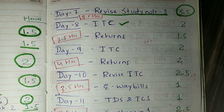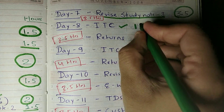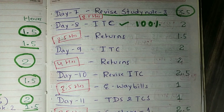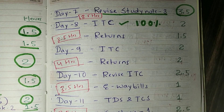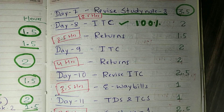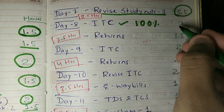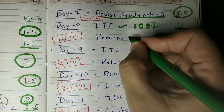On day 8, we start a fresh chapter — ITC, that is input tax credit. This chapter is big and you need to do 100% revision with questions. We will also cover value of supply, time and place of supply, and ITC — that will take 1.5 hours. Then we will start returns, which will also take 1.5 hours, making day 8 around 2 hours total.